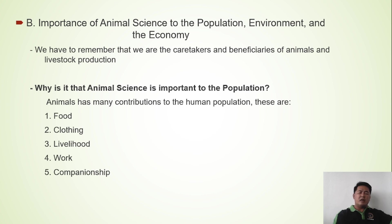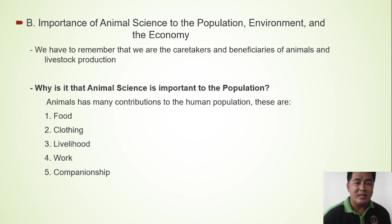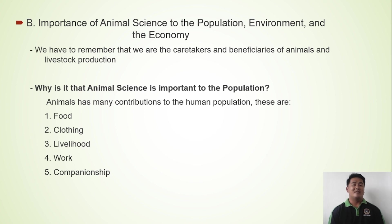We want to have someone, instead of just humans, to interact with — someone besides other humans to interact with. The animals are one of those others that we interact with. Animals can be more preferred sometimes. That is one reason for the contribution of animals to humans: companionship.